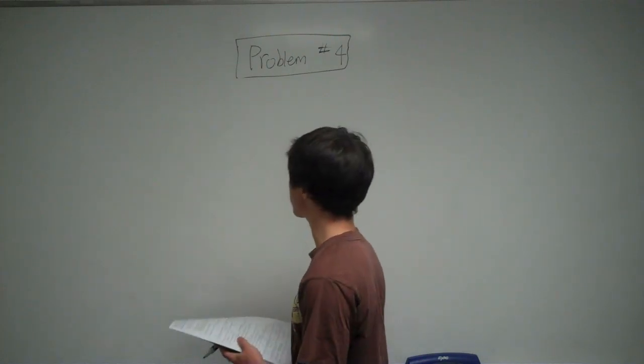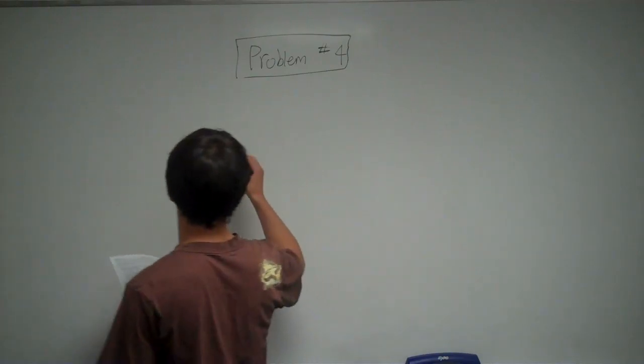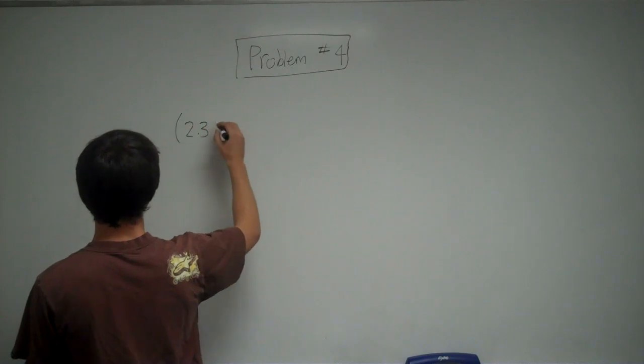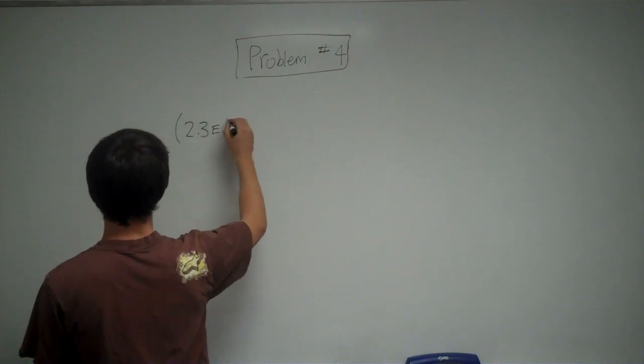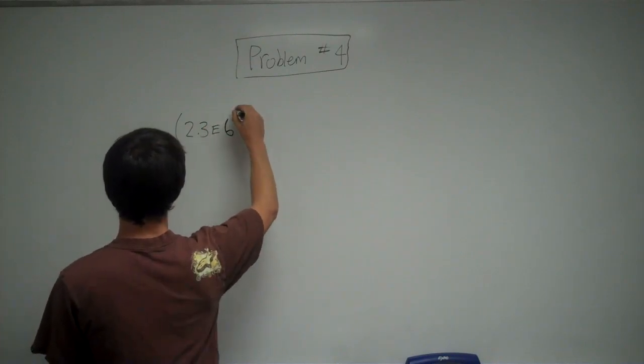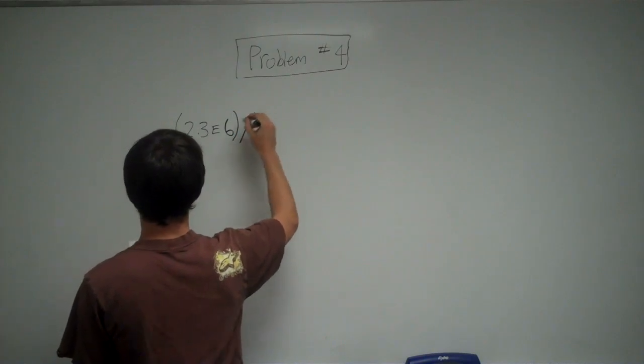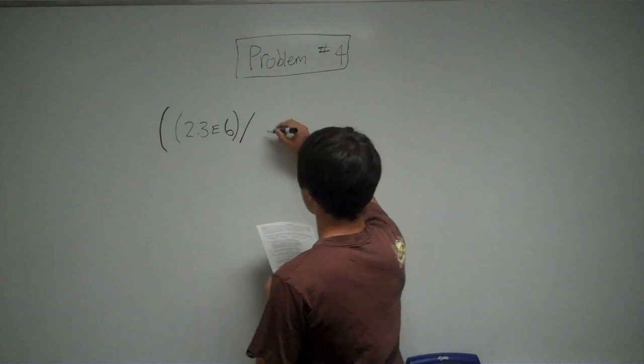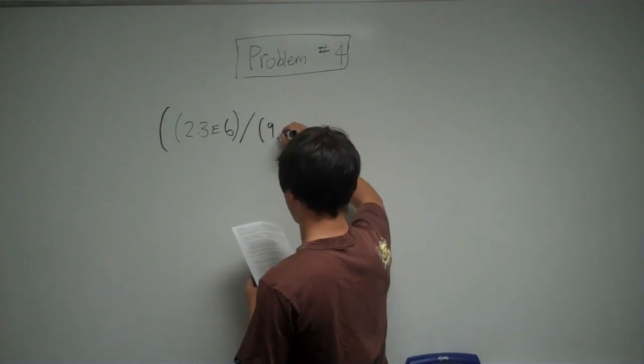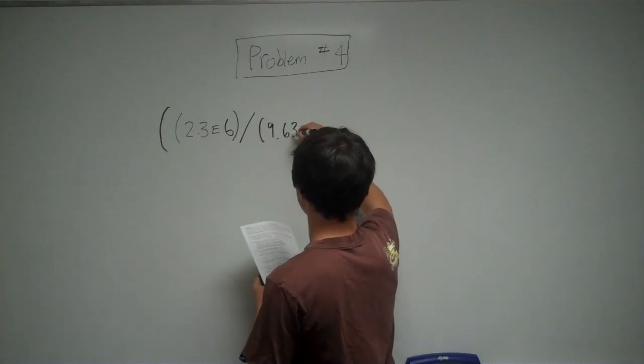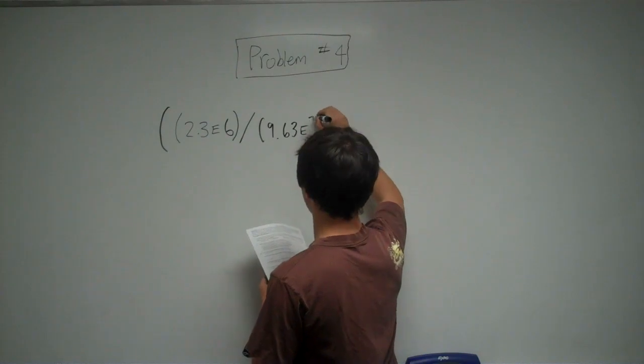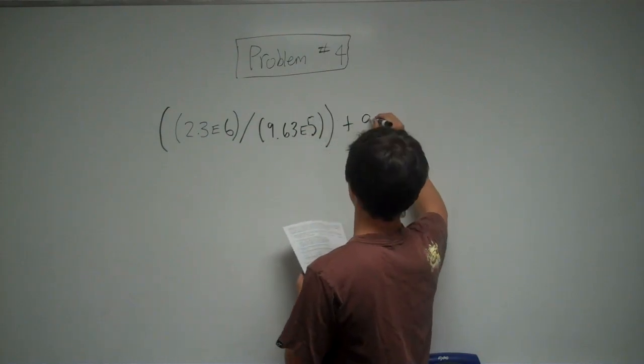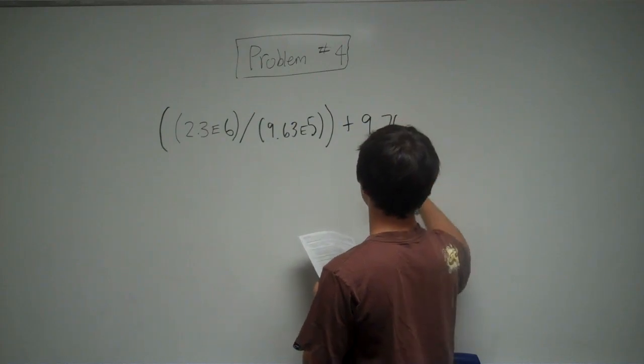So if you put this in your calculator, it should look something like this. 2.3E6 divided by, you can put another bracket, 9.63E5 plus 9.76 equals.